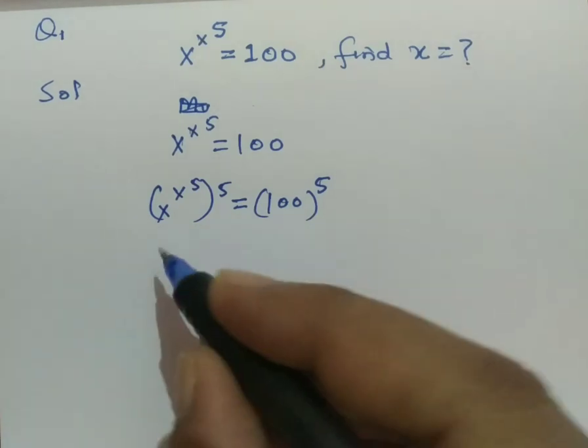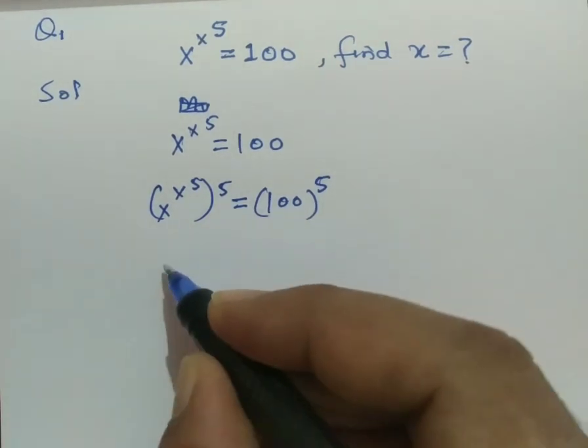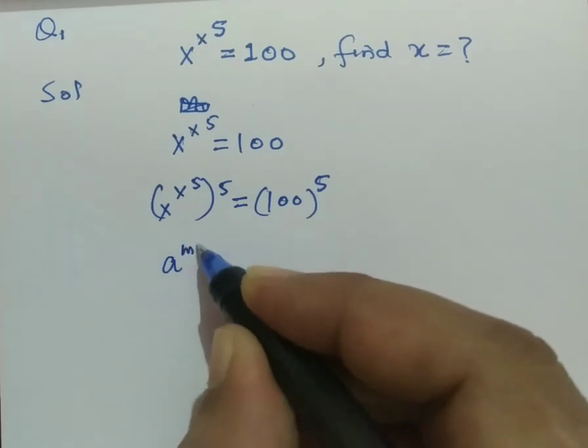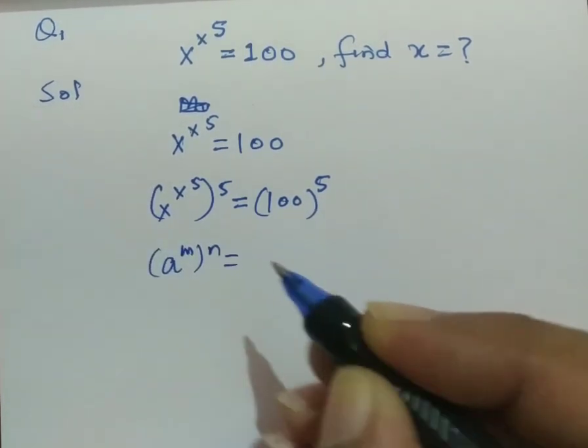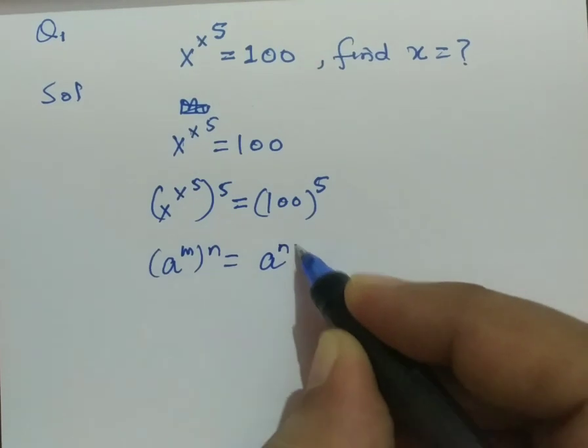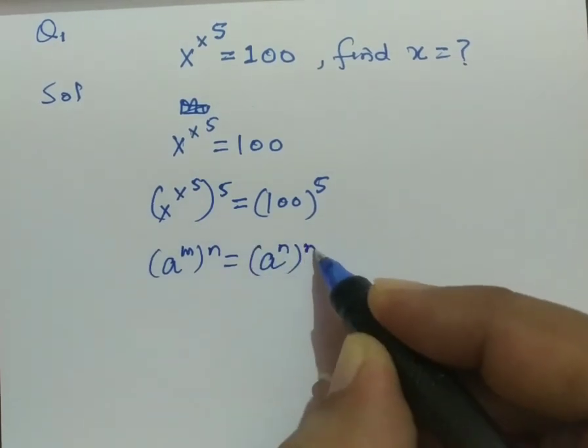Now recall the exponential rule. a raised to the power m, raised to the power n, can be written as a raised to the power n times m.